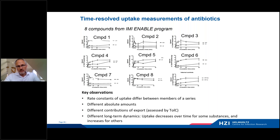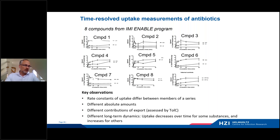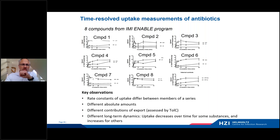We also studied the influence of efflux. You see two curves — the upper curve is mostly from an E. coli delta-tolC strain. You can see that whereas some compounds show a pronounced difference in uptake between wild-type and an efflux-impaired strain, this is not the case for other compounds. The absolute amount of uptake differs quite substantially even within members of a class. This is an assay with 96-well plate throughput that is good for comparing a larger panel of compounds within a series.